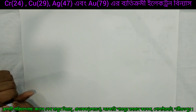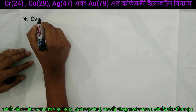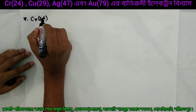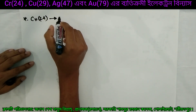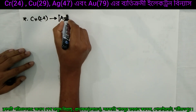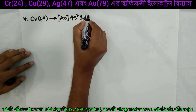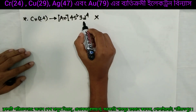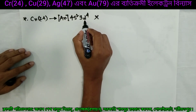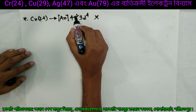First, we will talk about electron configurations. We will discuss chromium-24 and its electron configuration.